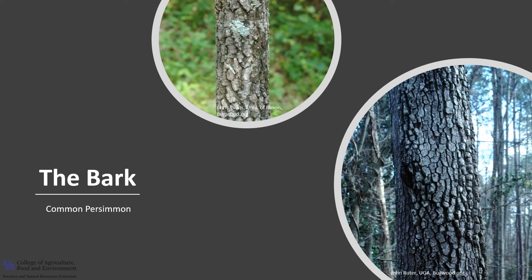The bark is a unique characteristic of the tree. It's a gray-brown with orange fissures when the trees are young. As the trees age, the bark becomes darker and breaks up into square, scaly plates. Some describe the bark as looking like alligator bark or charcoal briquettes.